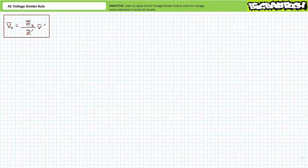Additionally, it is presumed the viewer has an understanding of basic series AC circuit properties. In our previous lecture on series AC circuits, we learned current through elements in a series circuit is the same, and the sum of voltage rises equals the summation of voltage drops from a closed loop. These are the most fundamental properties of series AC circuits. The DC voltage divider rule was a simple proportionality equation that allowed a user to quickly and directly solve for voltage across an individual element of interest without having to solve for total impedance or current values.